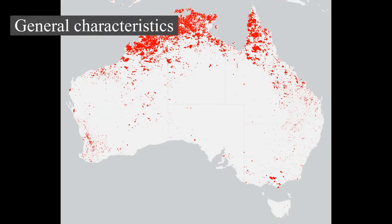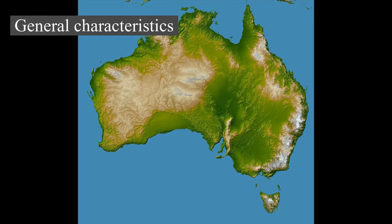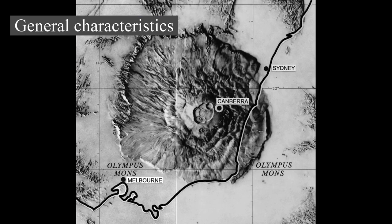Surrounded by the Indian and Pacific Oceans, Australia is separated from Asia by the Arafura and Timor Seas, with the Coral Sea lying off the Queensland coast and the Tasman Sea lying between Australia and New Zealand. The world's smallest continent and sixth largest country by total area, Australia, owing to its size and isolation, is often dubbed the island continent and is sometimes considered the world's largest island. Australia has 34,218 km of coastline excluding all offshore islands and claims an extensive exclusive economic zone of 8,148,250 square kilometers, which does not include the Australian Antarctic Territory.